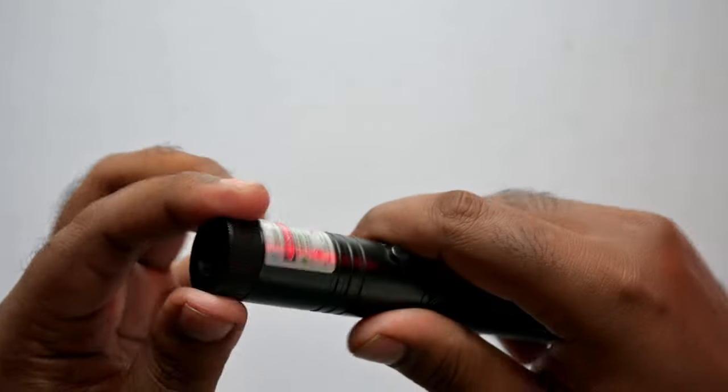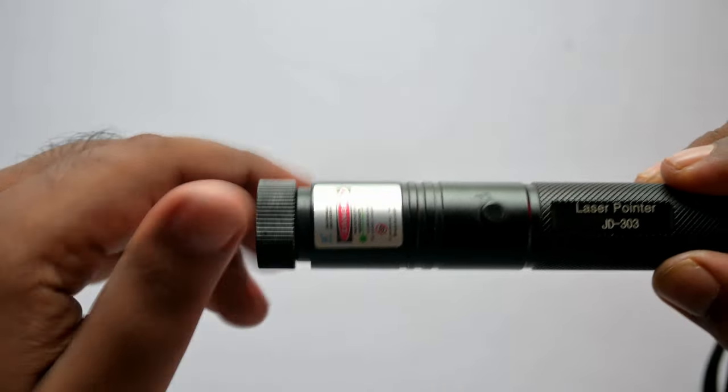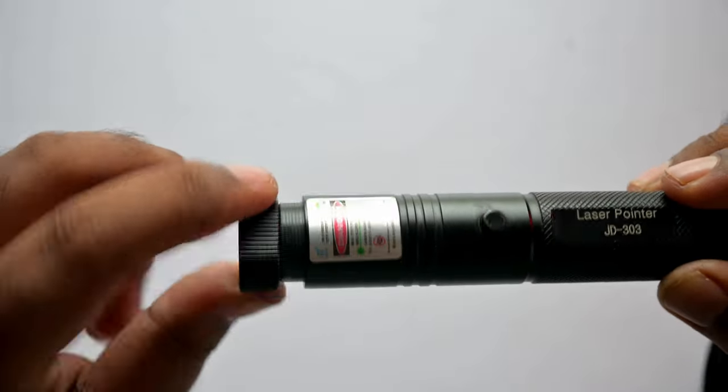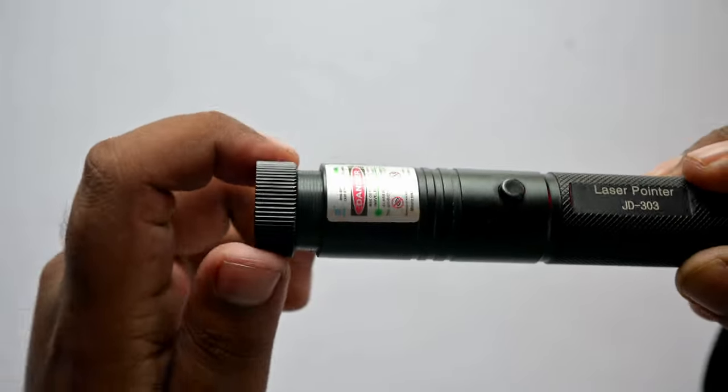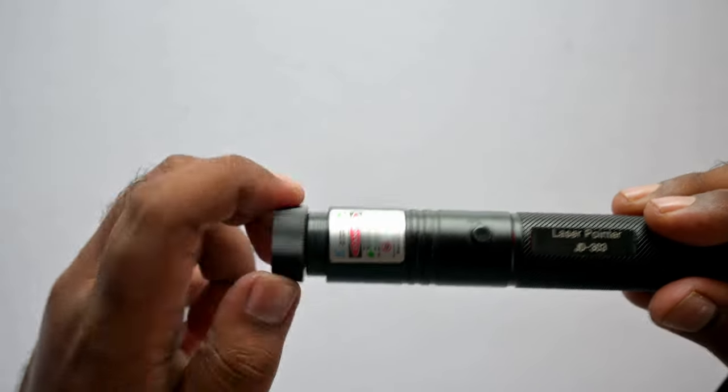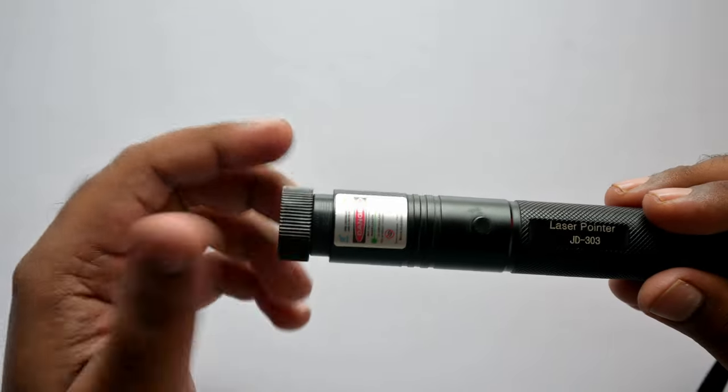After removing the filter cap, you need to rotate the second cap all the way down until it stops moving. See, like this. Now if you rotate it, it will start to open the filter cap. Don't remove the cap, just rotate the cap until you feel it tight.